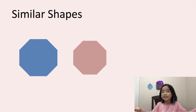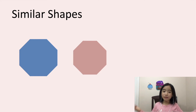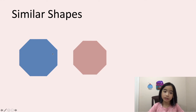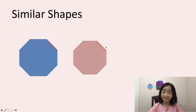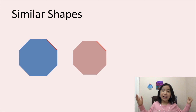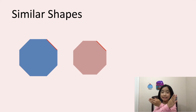Now let's look at this example. Are they similar shapes? Well, they're both octagons. Let's measure one side of the octagon. The blue octagon's side is longer than the pink octagon's side. So they are similar shapes, not congruent shapes.